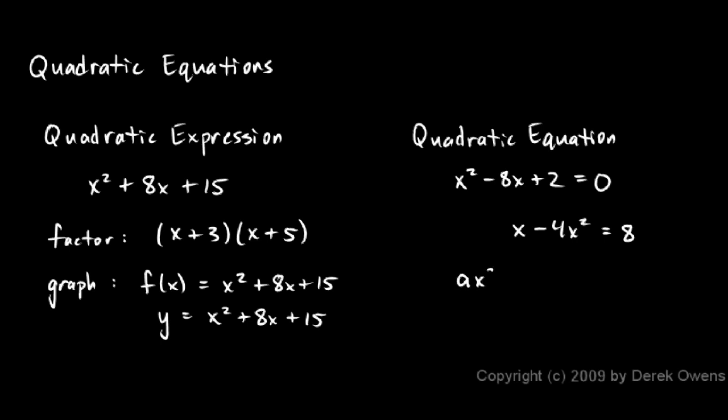We would call that ax squared plus bx plus c. This could represent any quadratic equation, just different numbers for a, b, and c could give us any quadratic equation in the world.